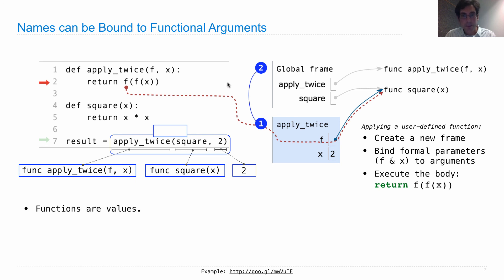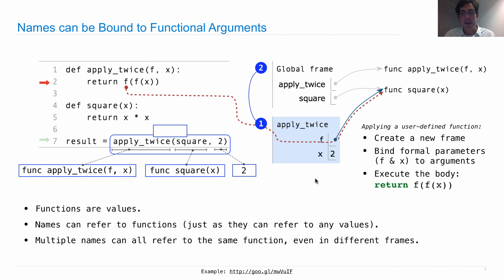So functions are values. They can be passed in as arguments, just like anything else, just like the number 2. What does it mean to pass something in? Well, what really happens is that in this new frame that's created when you call apply_twice, the formal parameter f, which you find here in the function, is bound to the thing you passed in. That's what it means to pass it in. It's just to give it a new name that's local to this frame. Names can refer to functions, just as they can refer to any value. And we can have multiple different names that all refer to the same function, even in different frames. So we have square referring to this function, and we have f referring to this function at the same time. And that's not a problem.